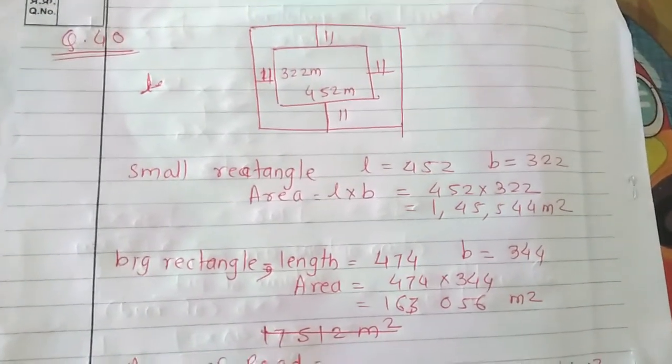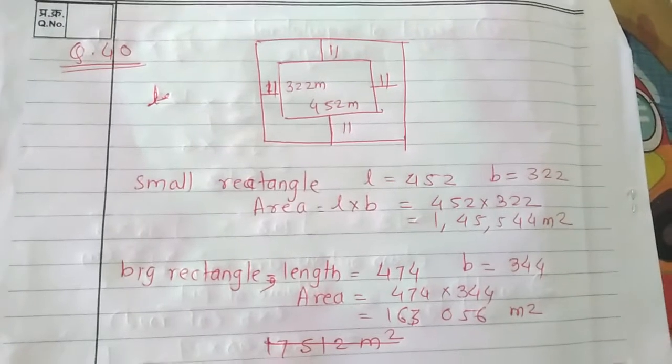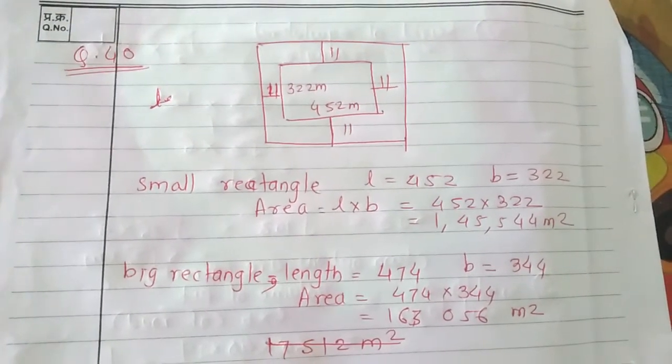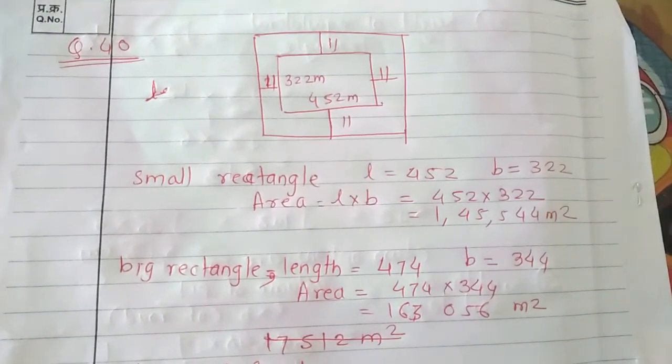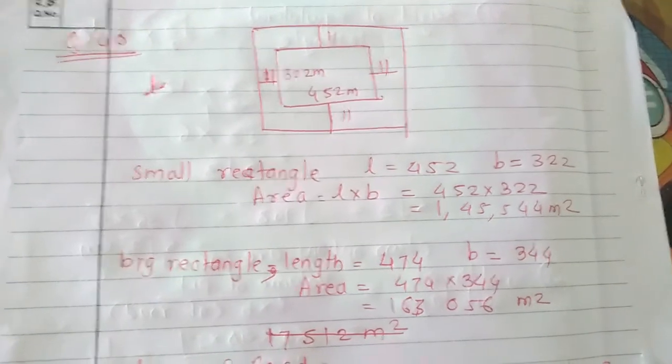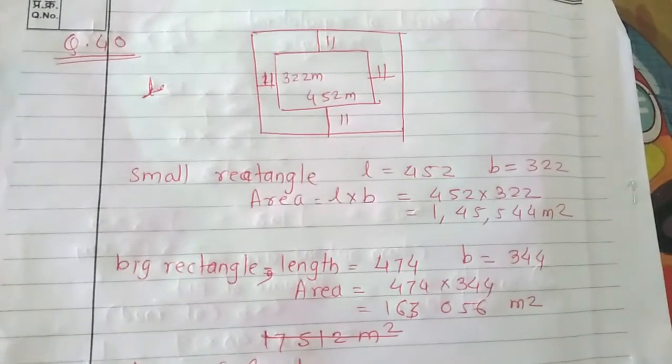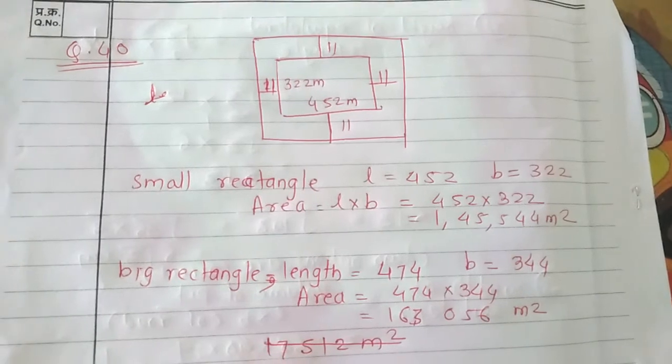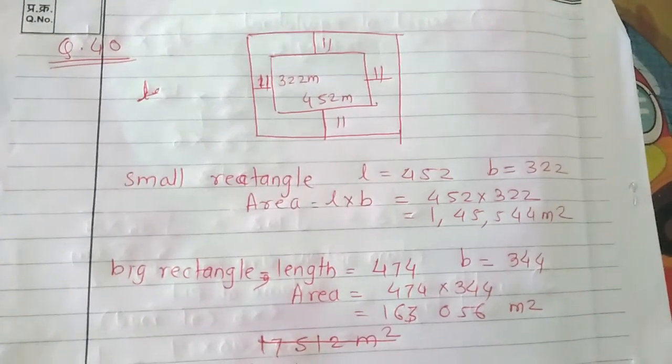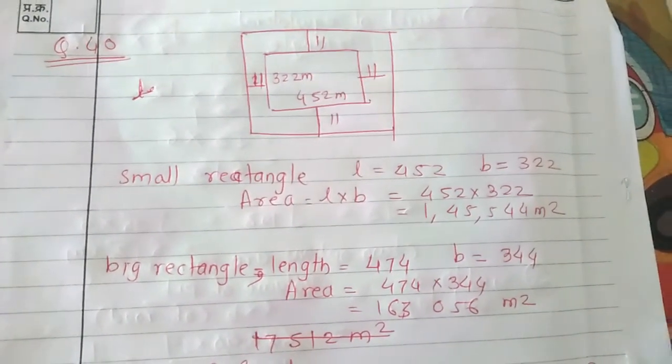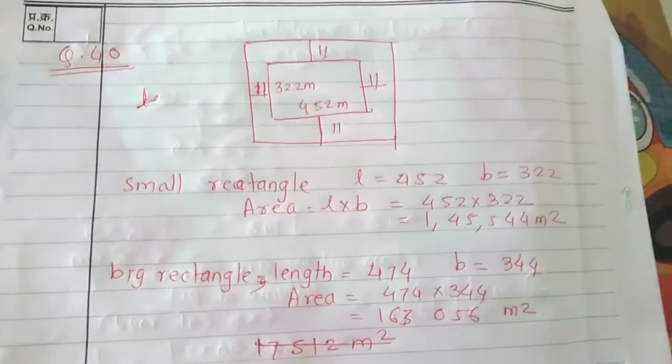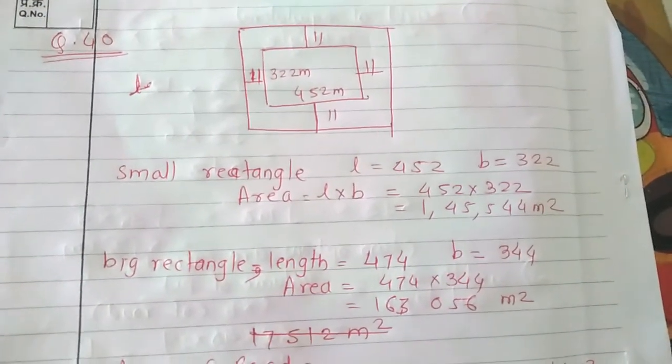I have doubt about question number 40 in which a garden is built whose length is 452 meters and breadth is 322 meters, and around that garden one road is built of 11 meter width. We have to find out the area of the road.